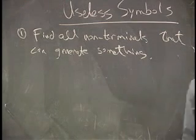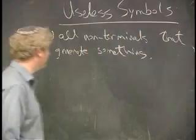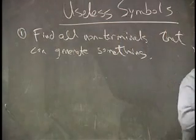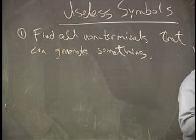And loop on their heads. Do that first. All the ones that don't generate anything, like C, get rid of them and get rid of every production in which they appear.